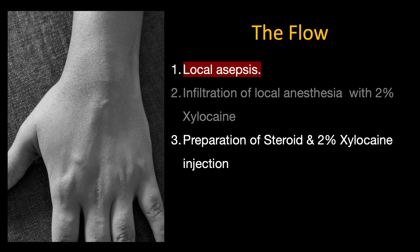After obtaining written and informed consent, we proceed to local asepsis. Cleaning and scrubbing of the area is absolutely essential for any musculoskeletal intervention — I spend almost 35 to 40% of procedure time on cleaning and preparation, including care of the probe. Pre-procedure local anesthesia is optional; I gave it here because the patient was anxious and requested it. You may prepare the injectate after giving local anesthesia to allow time for it to act.